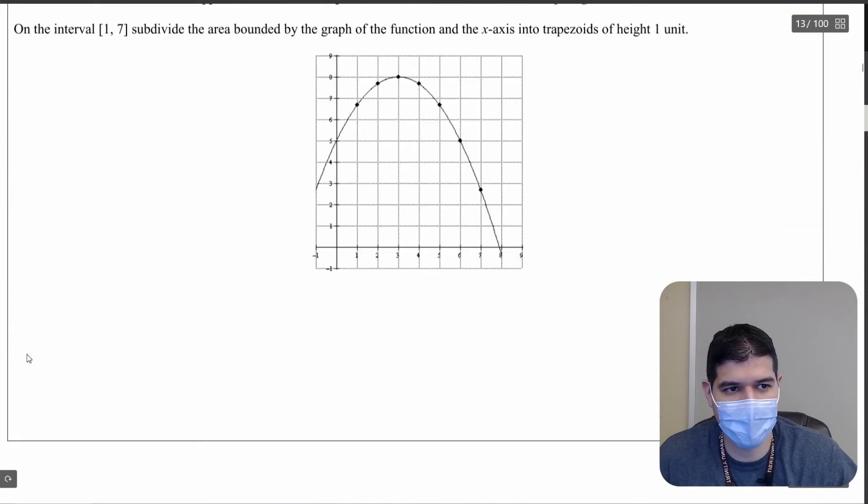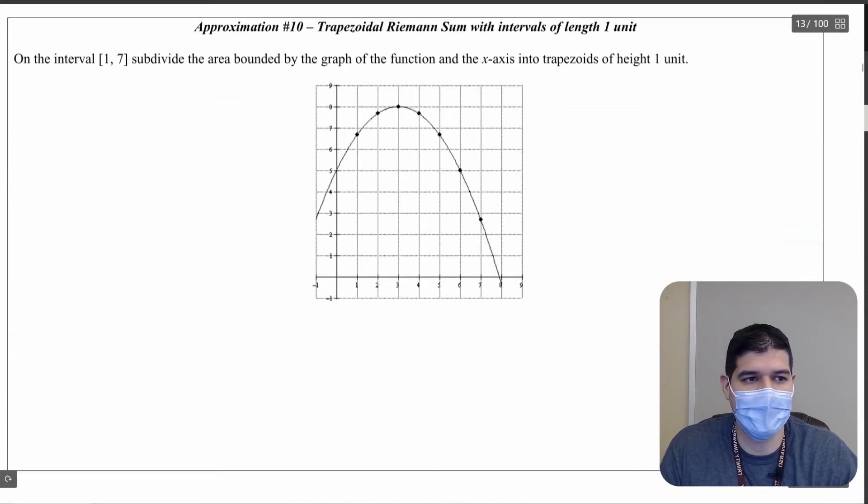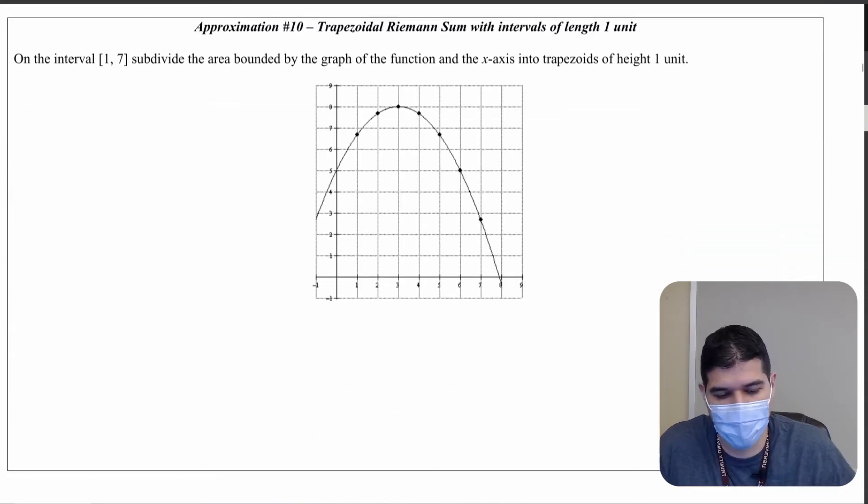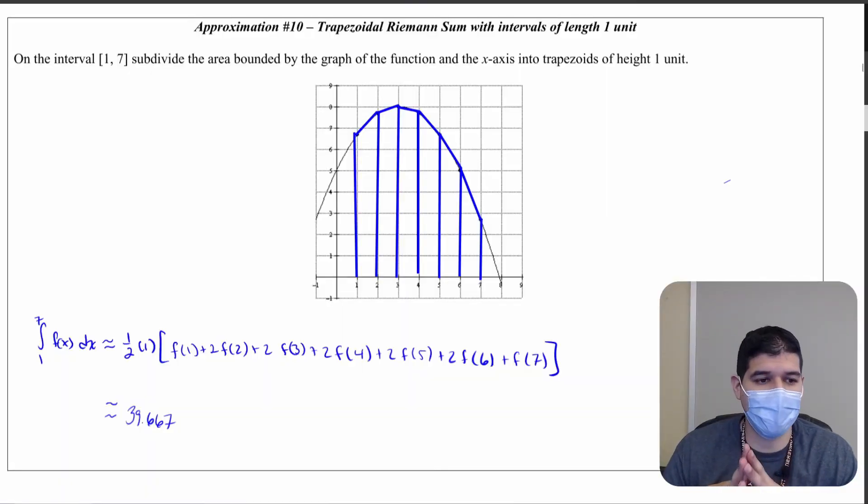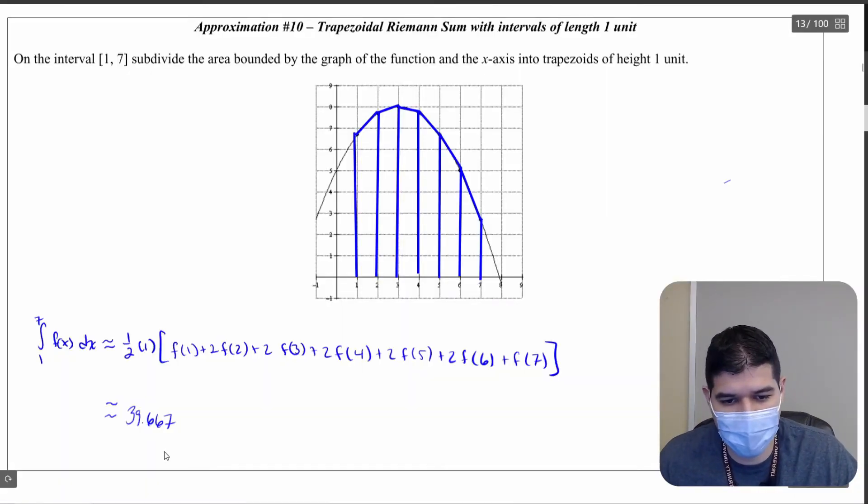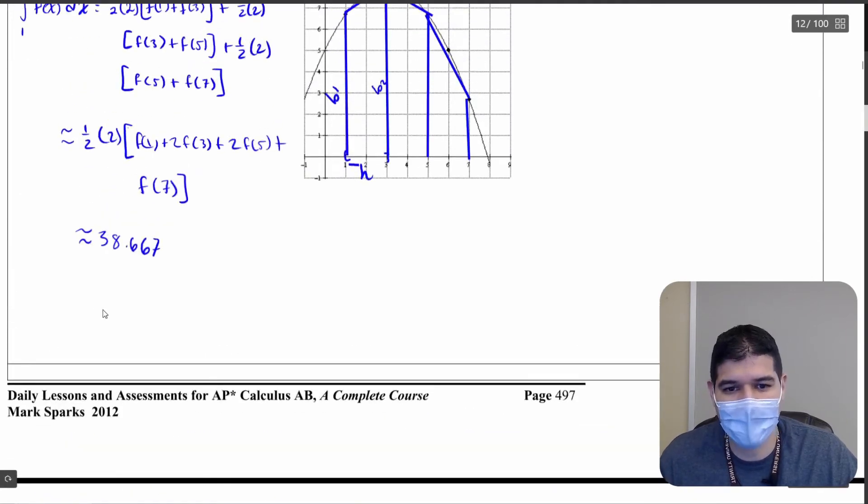Go ahead and try this again here but now we're going to go at an interval length of one unit this time. And that is going to finish off our second problem. Notice how close we had 39.667 and 38.667.